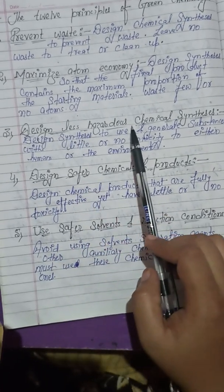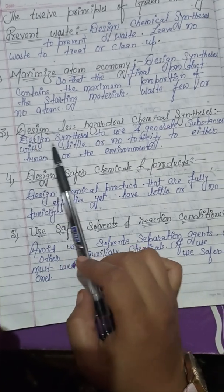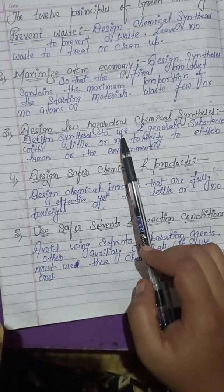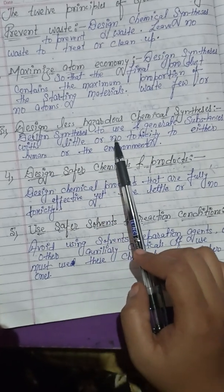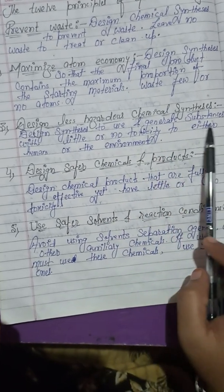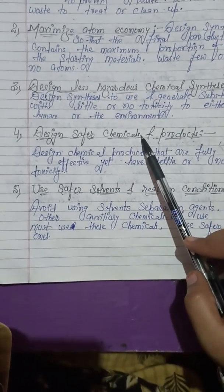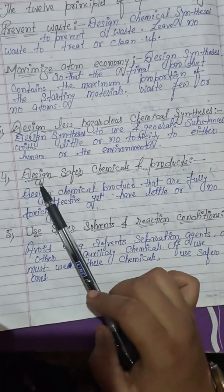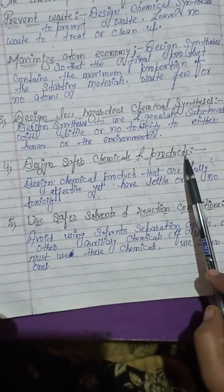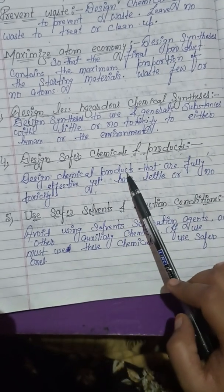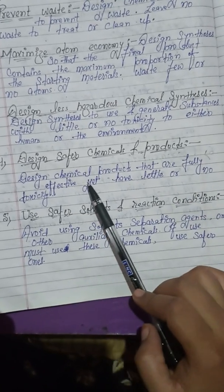Third, design less hazardous chemical synthesis: design synthesis to use and generate substances with little or no toxicity to either humans or the environment. Fourth, design safer chemicals and products: design chemical products that are fully effective yet have little or no toxicity.